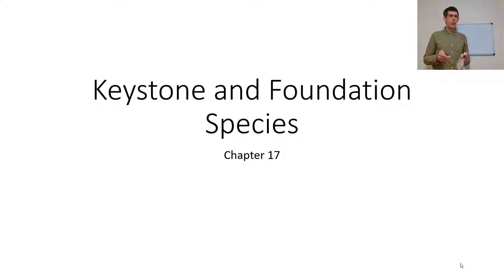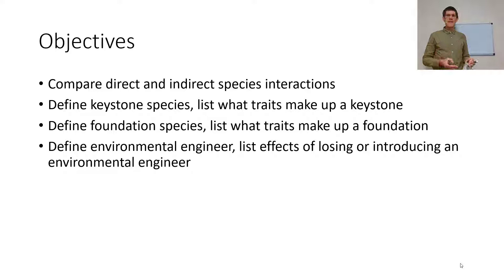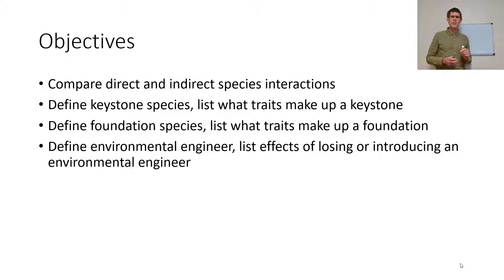You need to be able to compare direct and indirect species interactions, define a keystone species, list what traits make up a keystone, define a foundation species and list its traits — really just one trait — and define an environmental engineer, including the effects of losing or introducing an environmental engineer. So let's go.